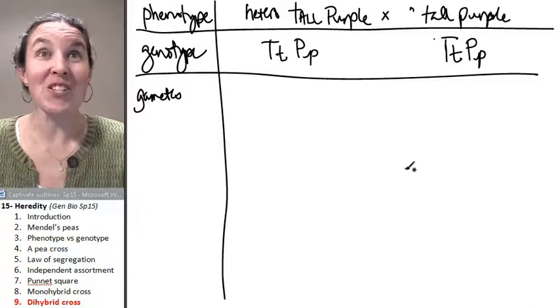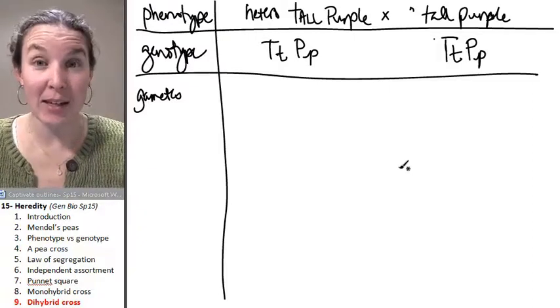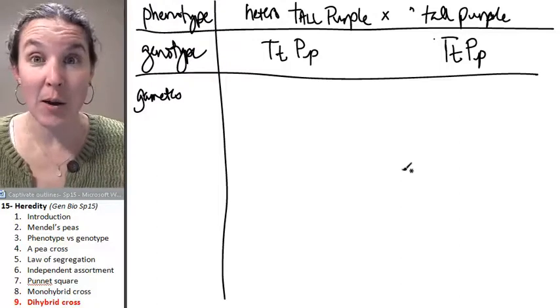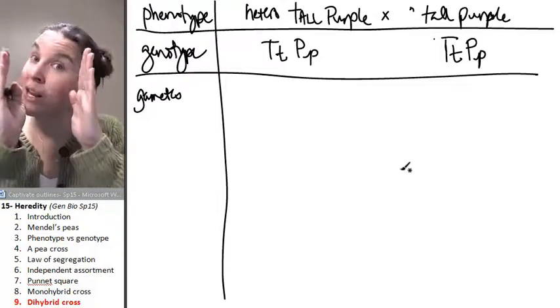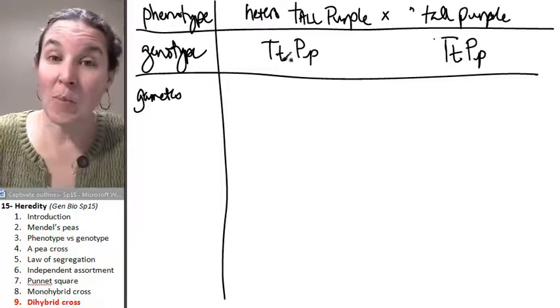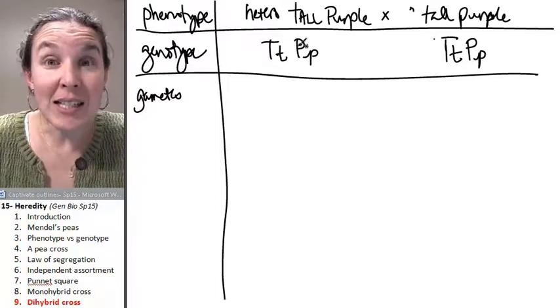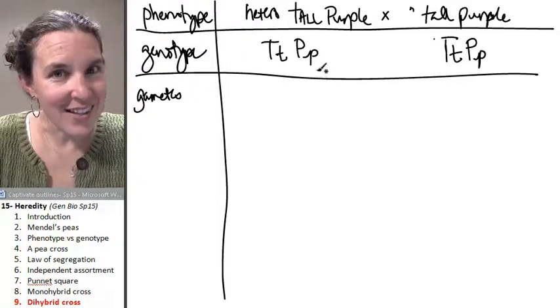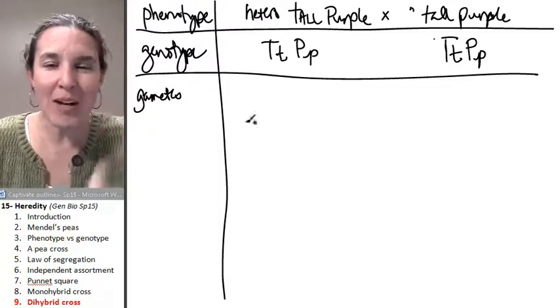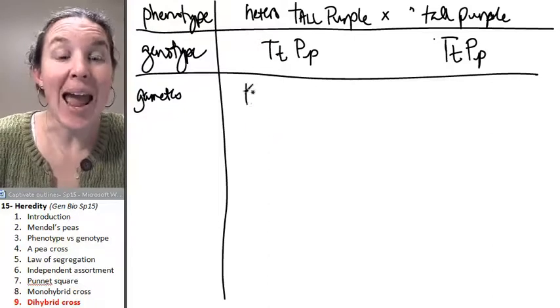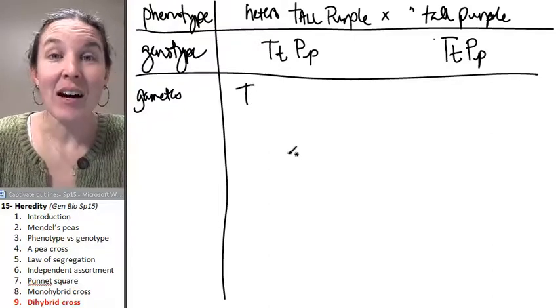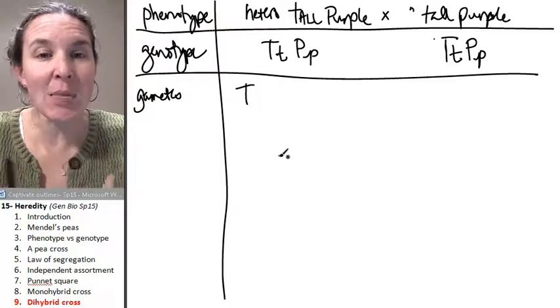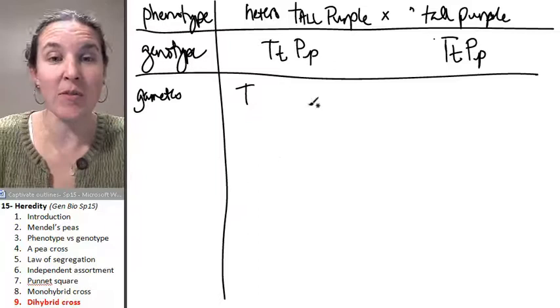This is where you can visualize the independent assortment section of the lecture on meiosis where you can see that we can line up our dominant alleles together on the same side or not. So watch all my possible gametes. I have to have at least one copy of each gene in my gamete for my gamete to be functional.